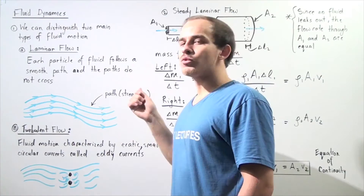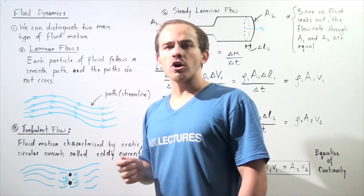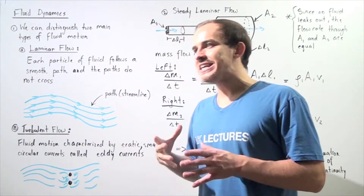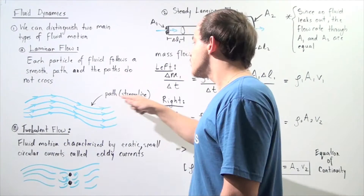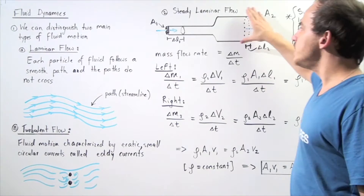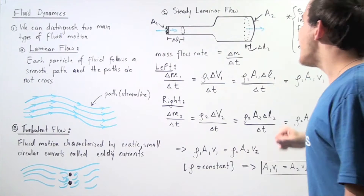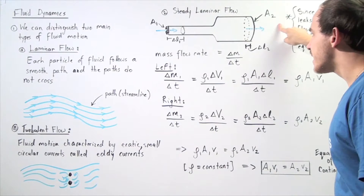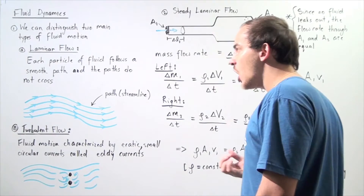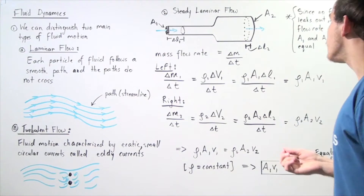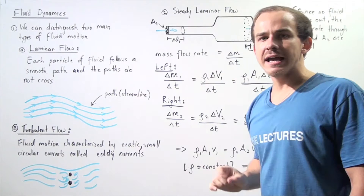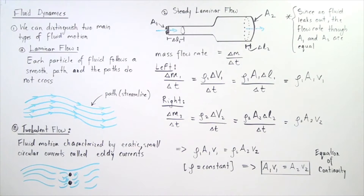Now let's examine laminar flow more closely and come up with an equation to deal with problems where fluids experience laminar or streamlined flow. Suppose we have a pipe where the left end has cross-sectional area A1 and the right side has cross-sectional area A2. We assume the fluid inside is flowing via laminar flow — steady streamline flow — and that there are no leaks, meaning the flow rate through A1 and A2 are exactly the same.